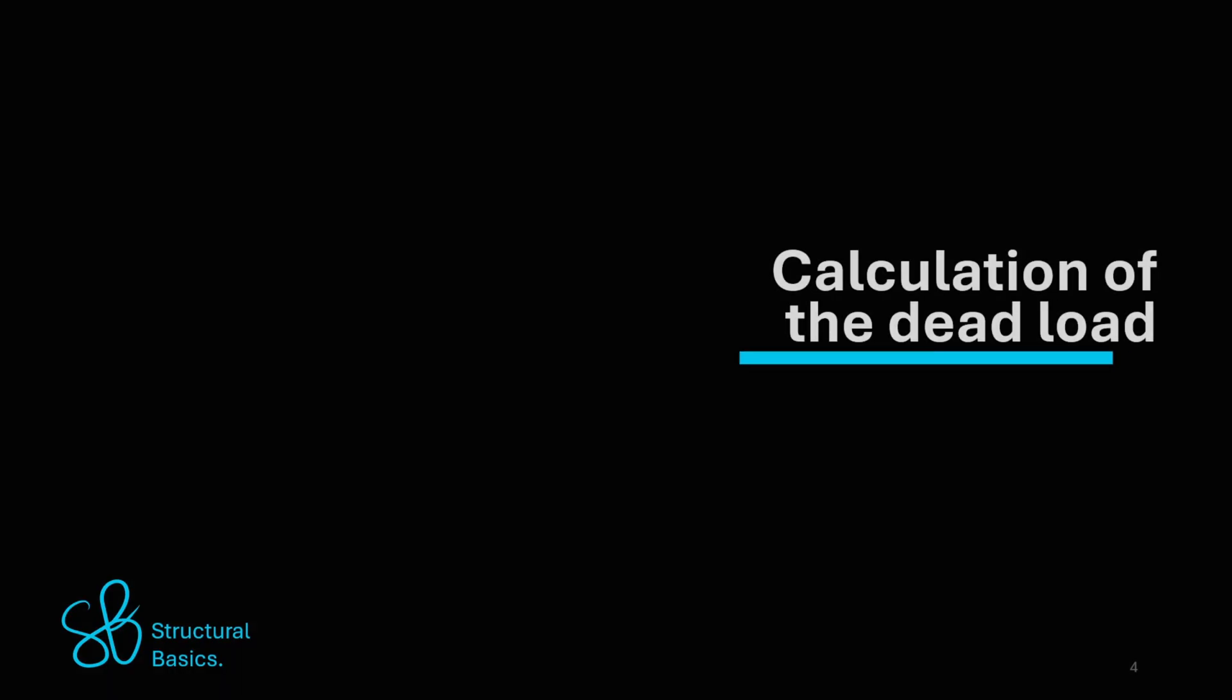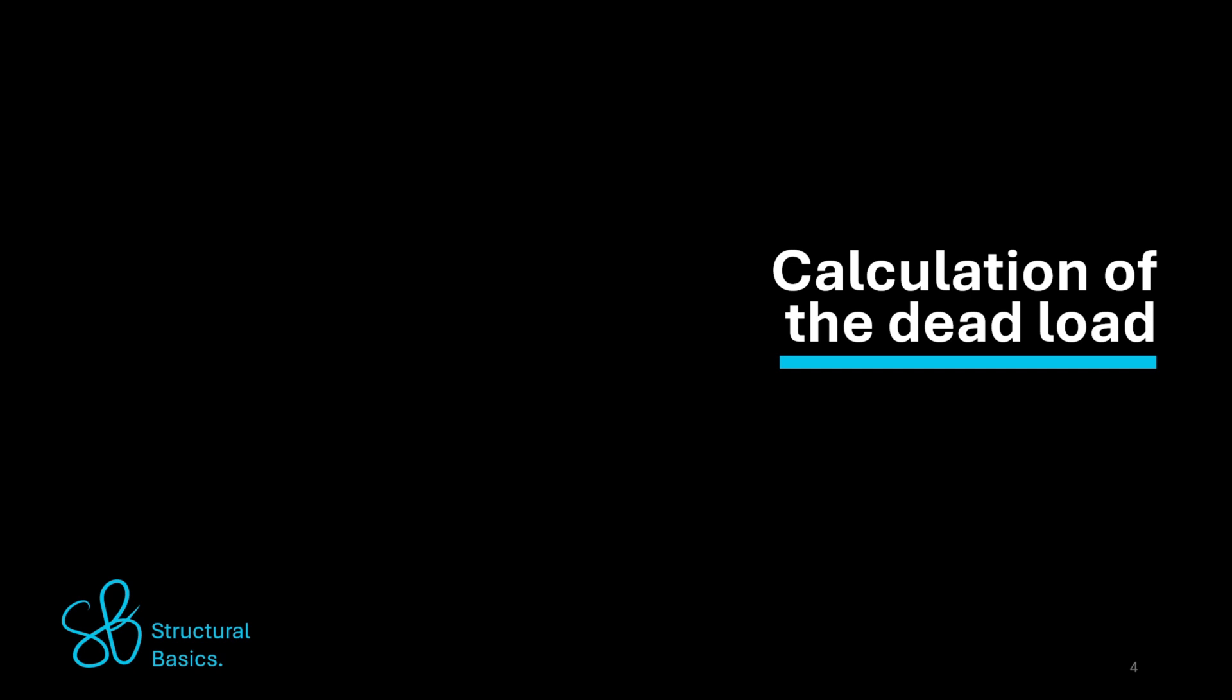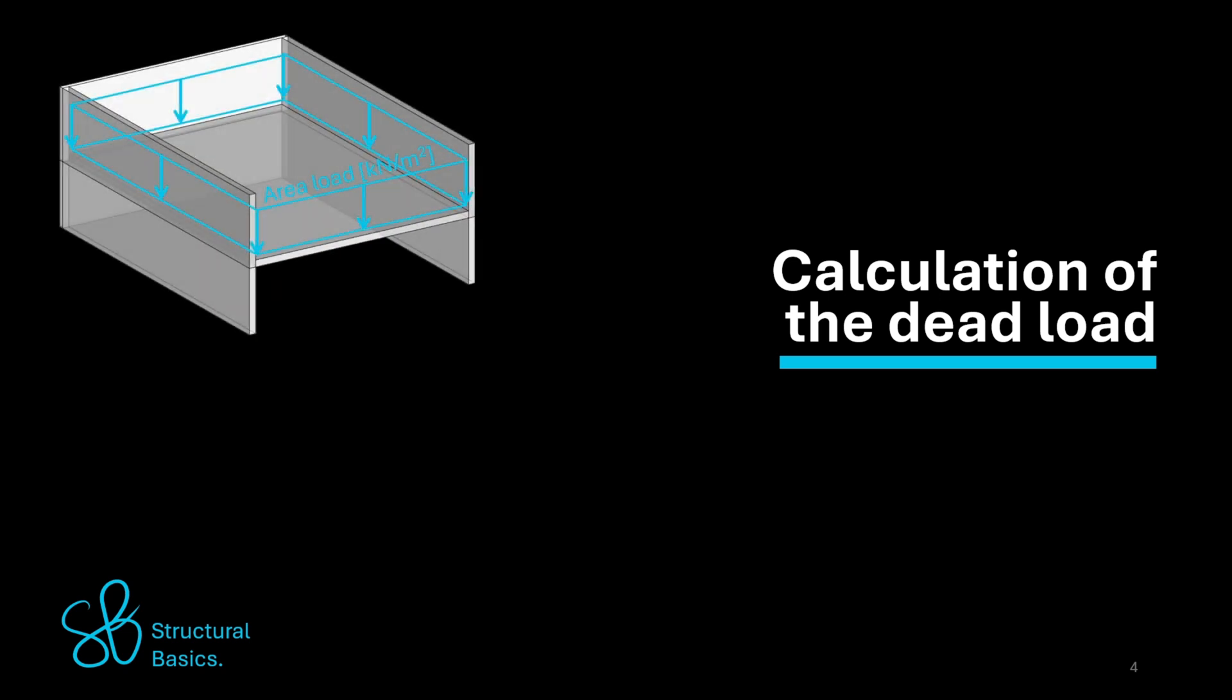Next up, the calculation of the dead load. How the dead load is calculated depends on the structural element that needs to withstand the load. For example, the dead load of a slab is usually calculated as an area load with the unit kilonewton per square meter because the slab itself needs to carry the load and the slab is a 2D static element.